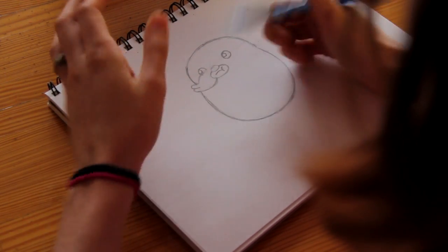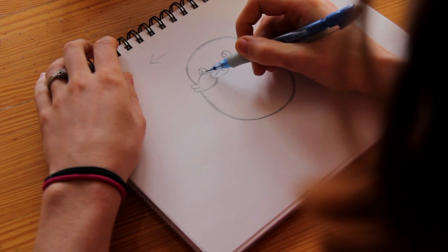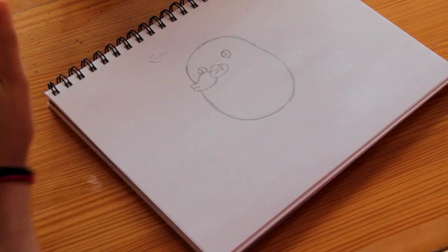And then this comes back around to his mouth. And then we'll erase part of his eye. Ta-da! So there is mustache number one.